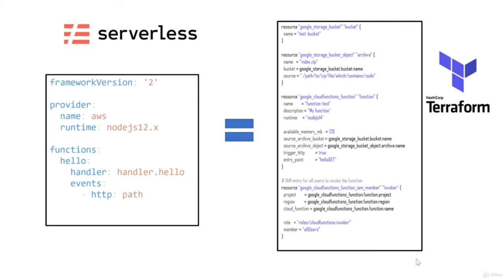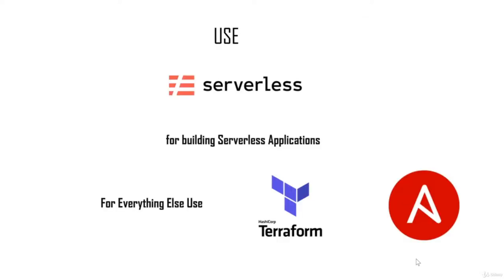A serverless application of just a few lines would take at least 30 to 40 lines to do the same in Terraform. Serverless framework makes it very easy to create serverless applications. However, you can only use it to create applications centered around cloud functions. If your architecture requires virtual machines and cloud storage, it's preferable to use Terraform or Ansible, which would require many more lines to achieve the equivalent serverless framework code.